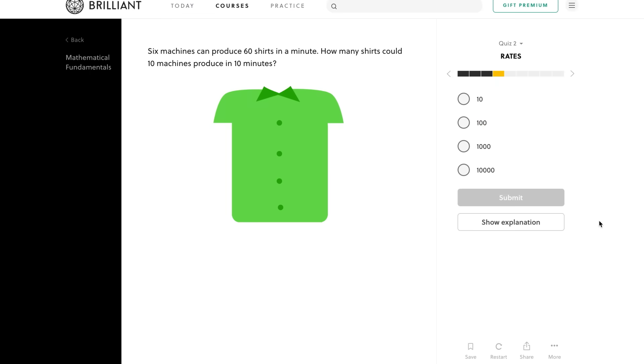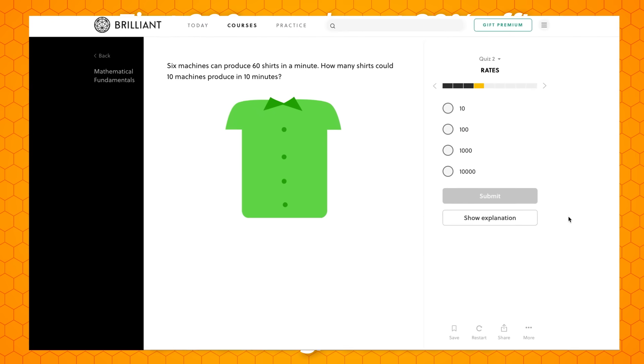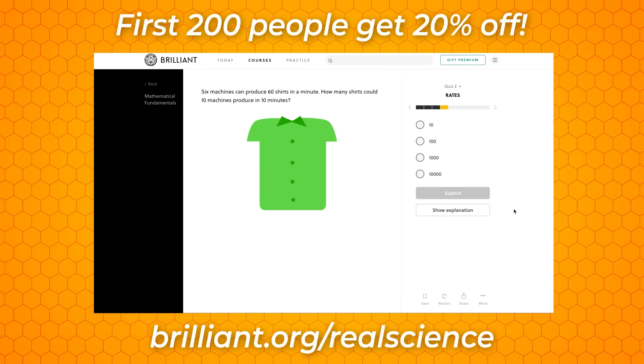To get started for free, visit brilliant.org slash real science, or click on the link in the description, and the first 200 people will get 20% off Brilliant's annual premium subscription.